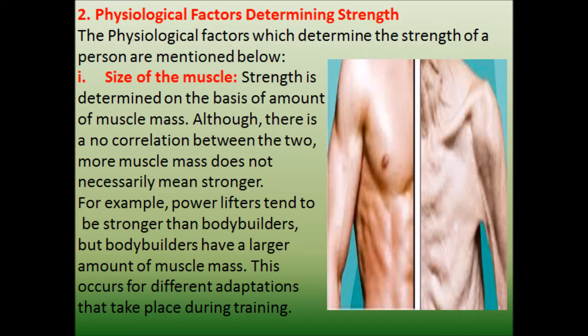Number one: size of the muscles. Strength is determined on the basis of the amount of muscle mass. Although there is no direct correlation between the two, more muscle mass does not necessarily mean stronger. But usually on average, it has been observed that when the size of the muscle is bigger, the individual will likely have more strength.